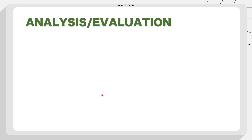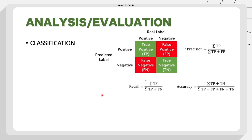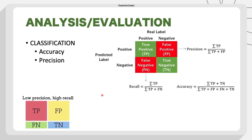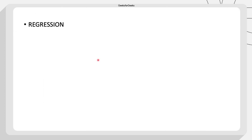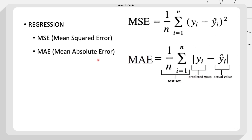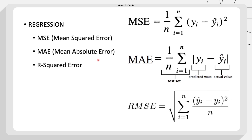After that comes analysis or evaluation. Once you have made predictions, you need to evaluate how your model is working. You compare predictions with actual test values using an evaluation matrix. For classification tasks, you can use metrics like accuracy, precision, recall, and F1 score based on a confusion matrix. For regression tasks, you can use mean squared error, mean absolute error, or R-squared error.